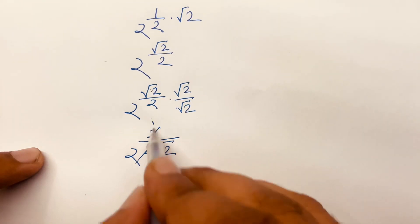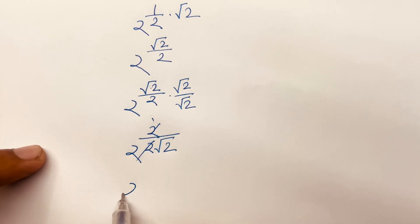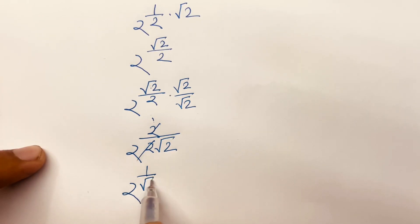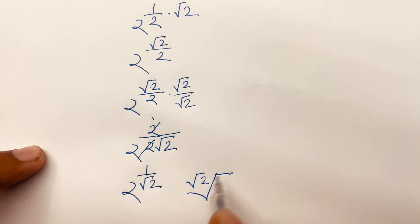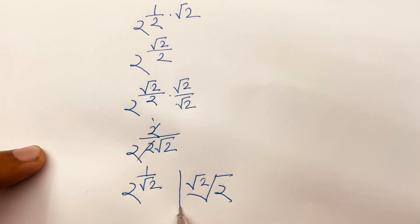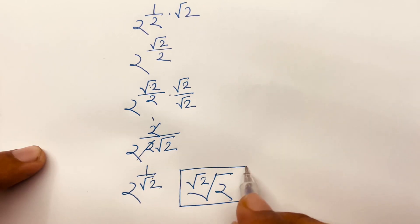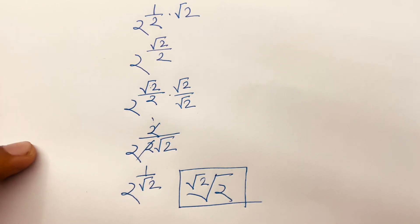Then it will be root 2, and here is 2. This is our final answer: 2 to the power 1 over square root 2, which equals root 2 times 2.